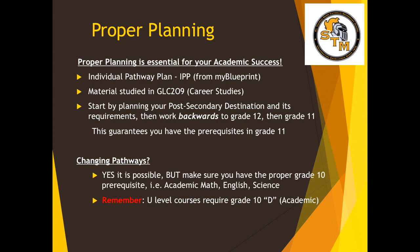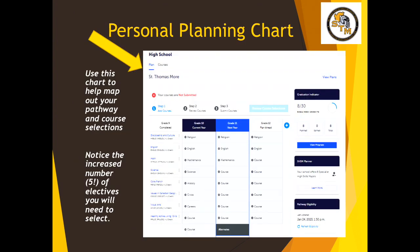Now, changing pathways. Some of you might be wondering about that — yes, this is possible, but you need to make sure that you have the proper grade 10 prerequisite. For example, if you wanted to do English 3U but you took 2P English in grade 10, you would first need to go back and do English 2D before taking 3U. Use your personal planning chart to help map out your pathway and your course selection, and notice the increased number of electives that you will need to select.